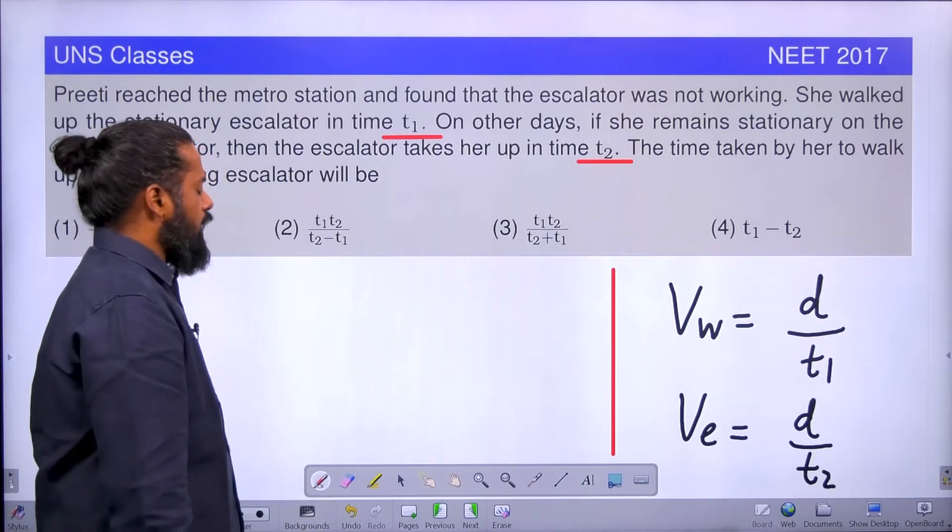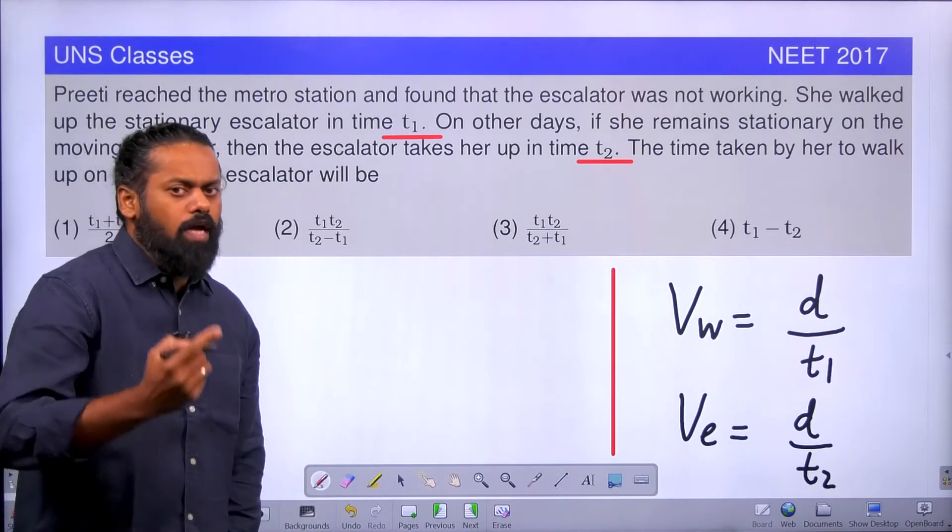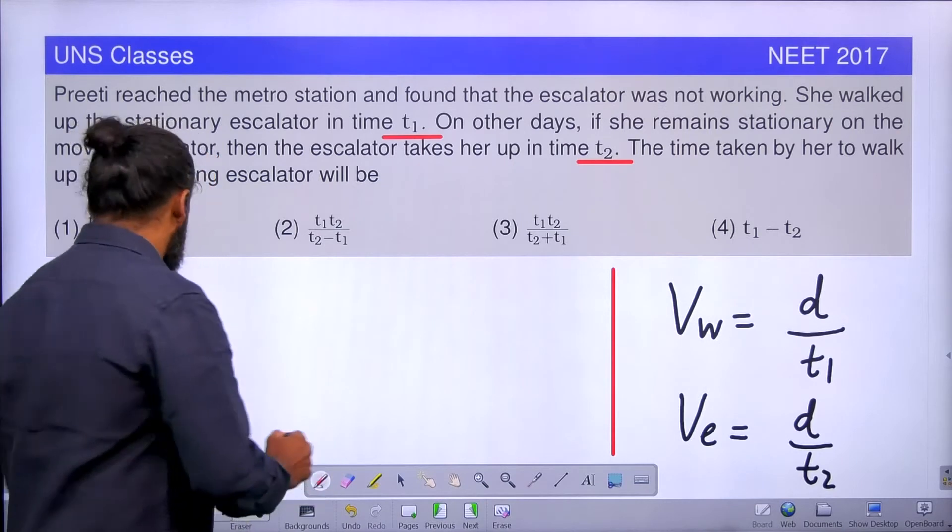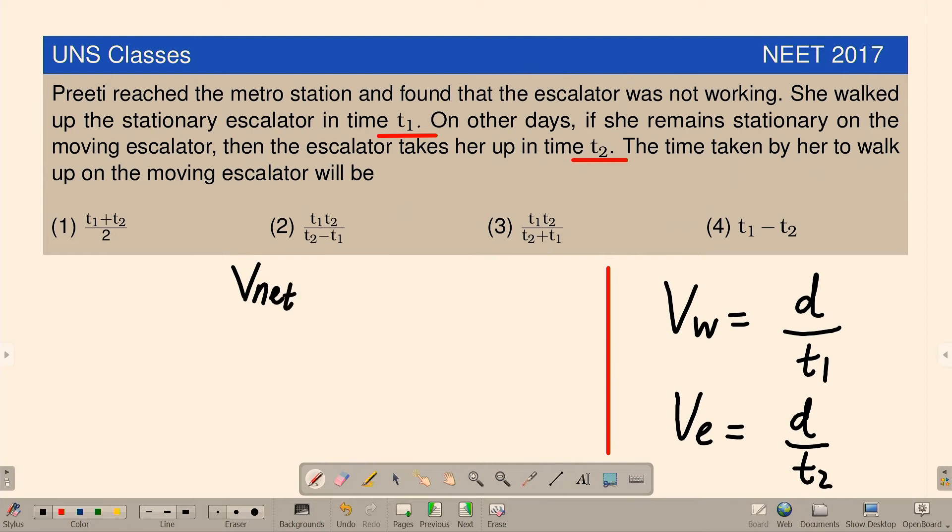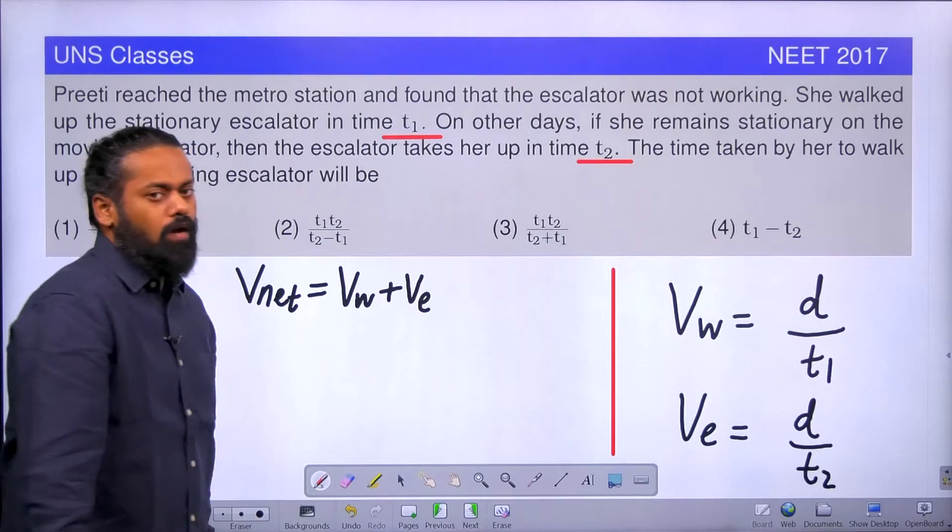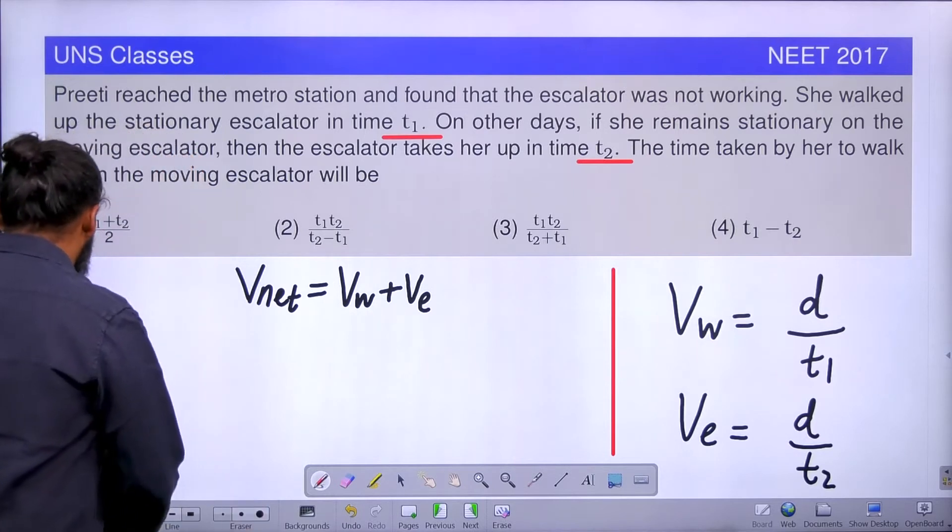If that is the case, when you are walking on an escalator, the net velocity will be how much? V_net is equal to V_walking plus V_escalator. The net velocity when you are walking on an escalator. We can find out the time.